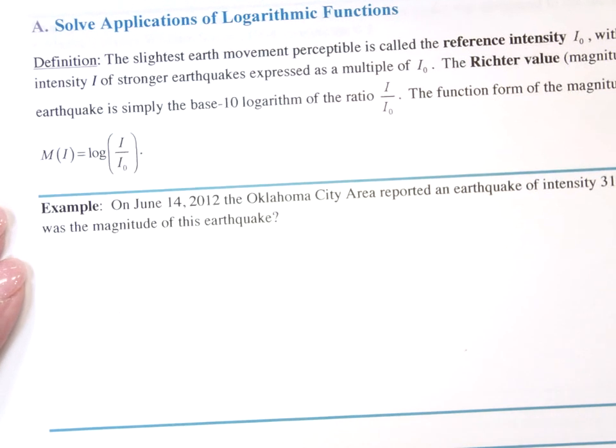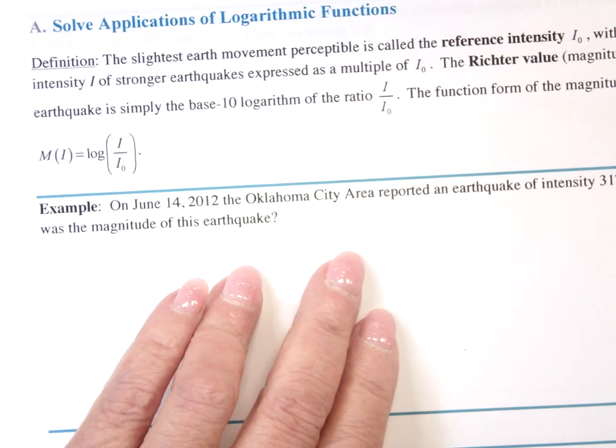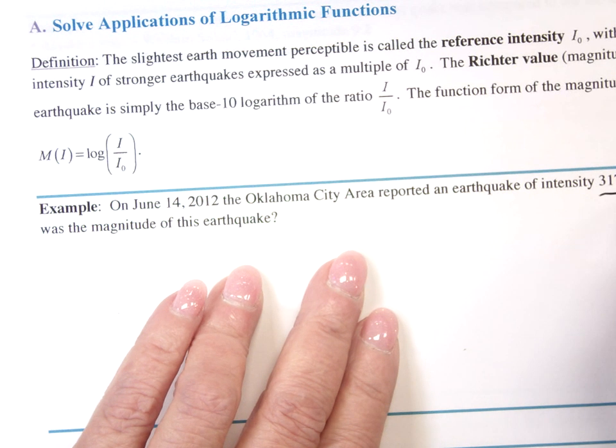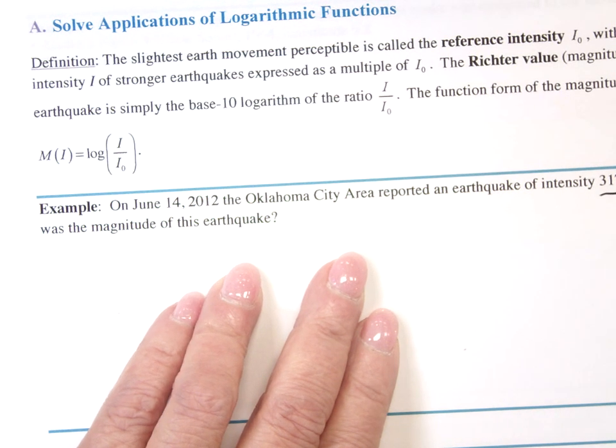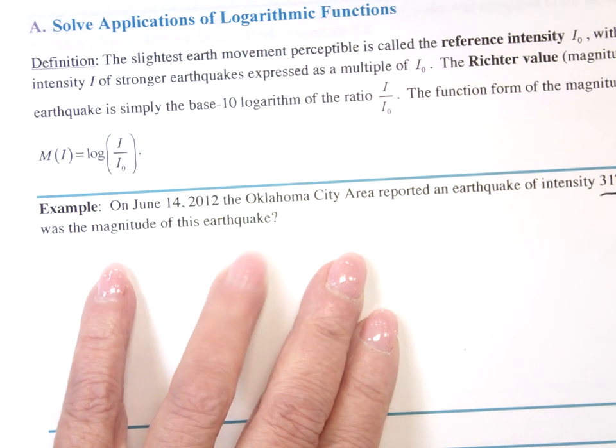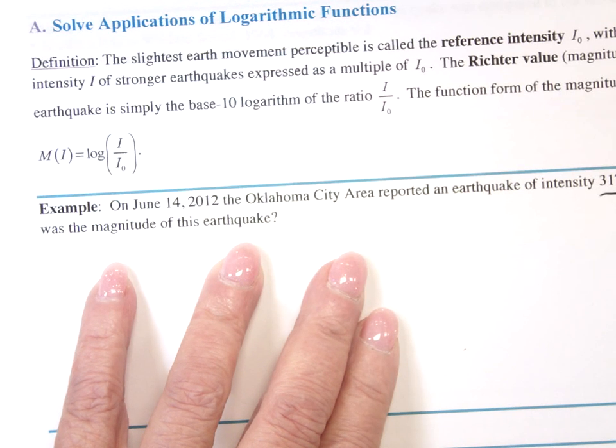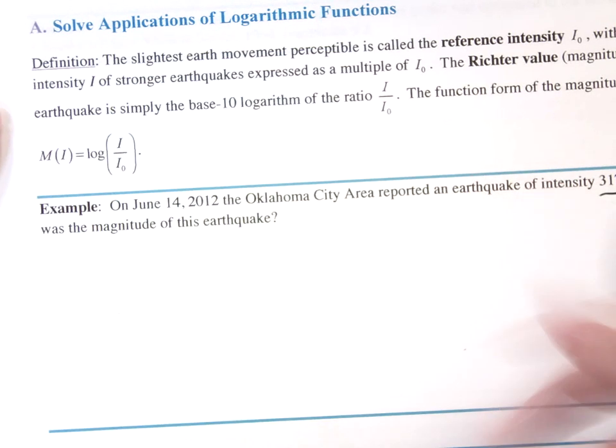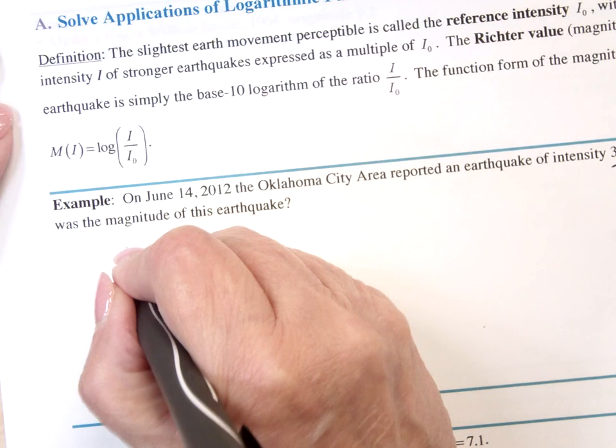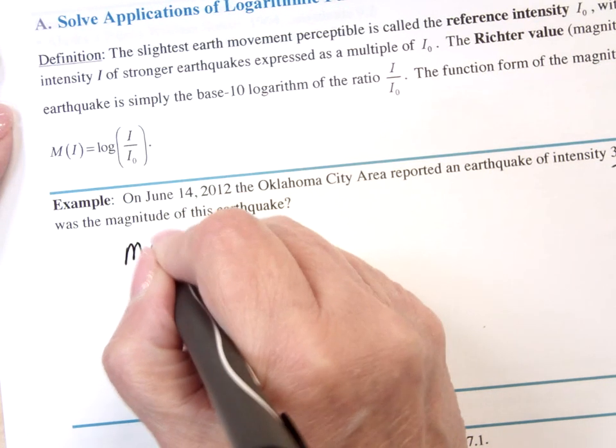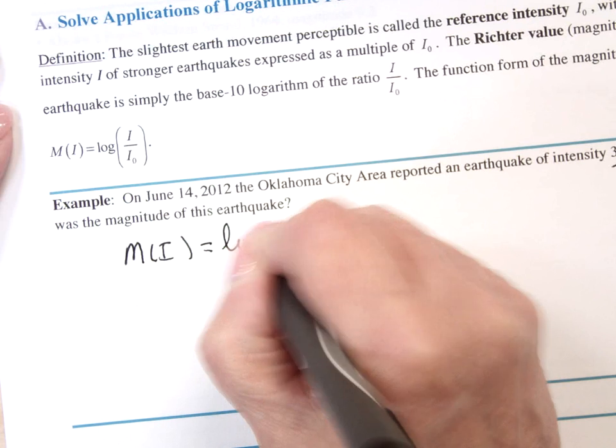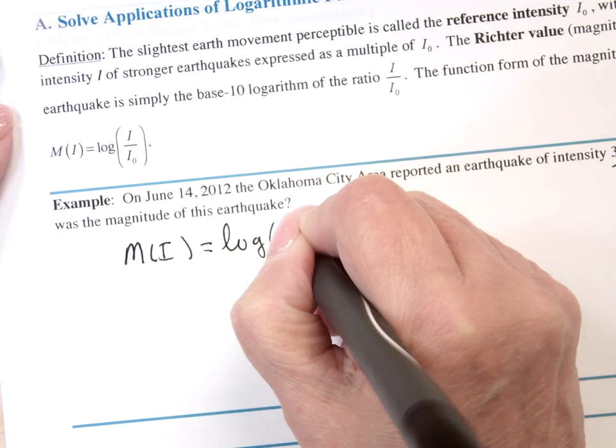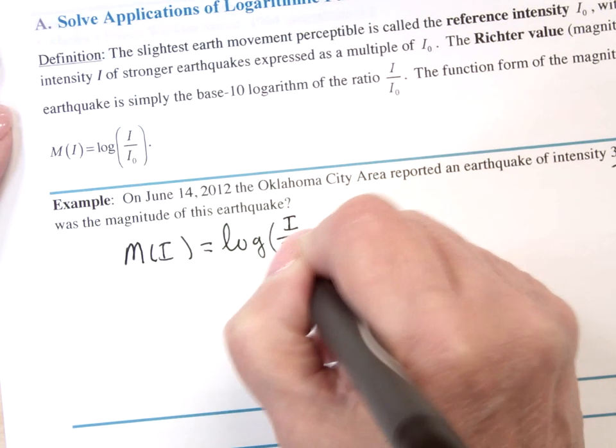It says, on June 14, 2012, the Oklahoma City area reported an earthquake of intensity 317 I sub zero. What was the magnitude of this earthquake? Well, magnitude is the M, so that says I want to find M of I, which is the log of I divided by I zero.